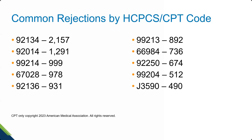Code 92014 — ophthalmology services, medical exam and evaluation, comprehensive, established patient — is being rejected because: field 11 of the CMS-1500 must be completed; the claim needs to be submitted to the Railroad Retirement Board; and the facility lab name or address is missing. Code 99214 is similarly rejected: field 11 must be completed, and the primary identifier for the provider was invalid or missing — verify the number was keyed correctly and that rendering and billing numbers match.